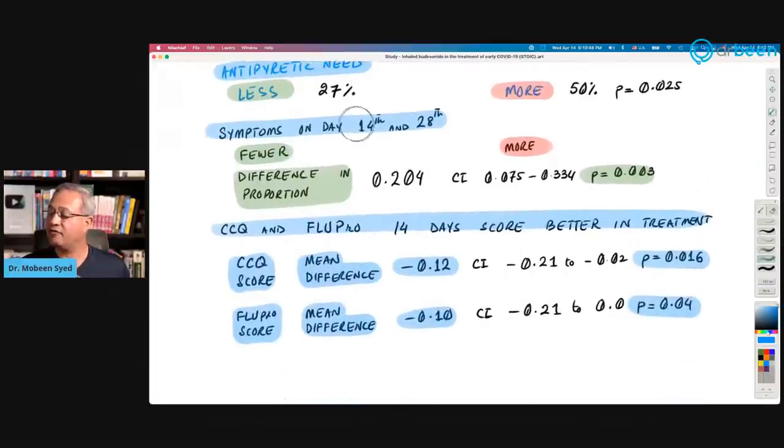Symptoms on day 14 to 28. Fewer symptoms on this side, treatment side, and more symptoms on the usual care. Difference in proportion of the symptoms at 14 and 28 days, 0.24 and P-value was significant as well.